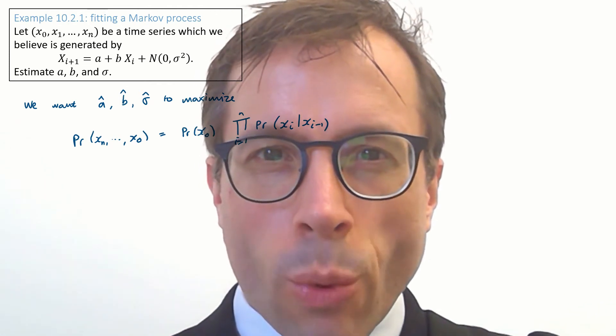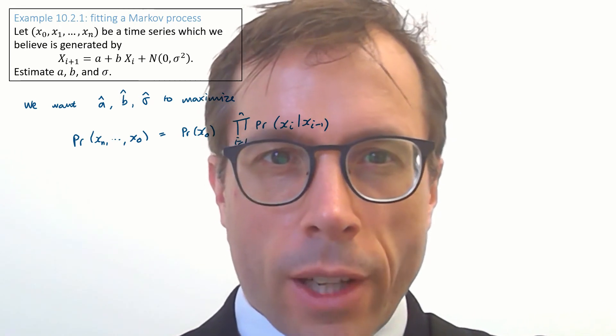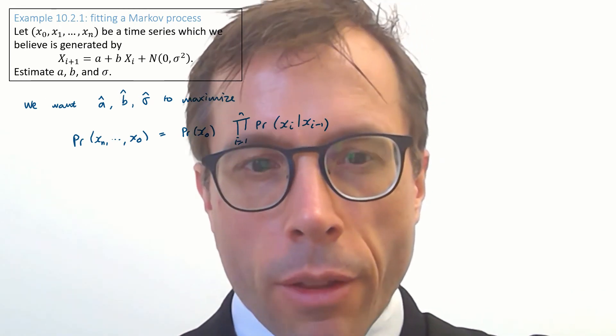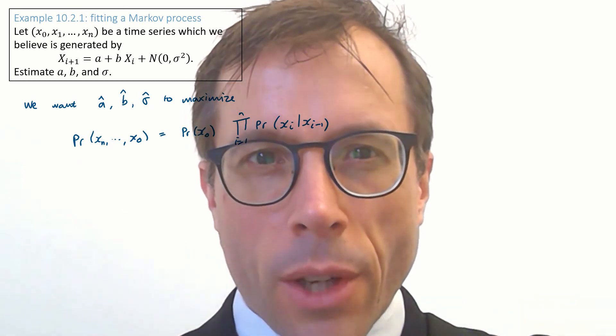Now, writing it out this way highlights something a bit weird. The total likelihood involves two factors, one for the initial state x0 and the other for all the subsequent states. How are we meant to maximise the first term?